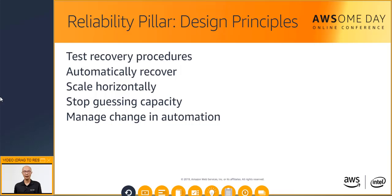Scale horizontally and distribute requests among multiple small resources. Stop guessing capacity — in the cloud environment, you have the ability to monitor demand and system utilization, and automate the addition or removal of resources. This ensures you have the optimal level to satisfy demand without over or under provisioning. Manage change through automation — changes to your architectures and infrastructure should be made using automation, so you only need to manage change through your automation, not every single system or resource.